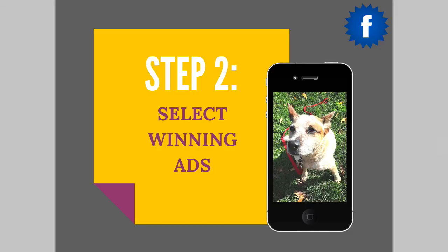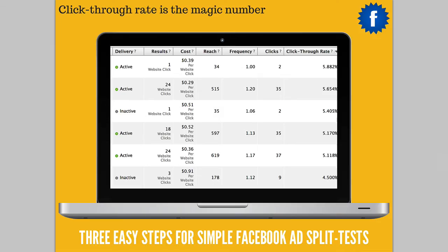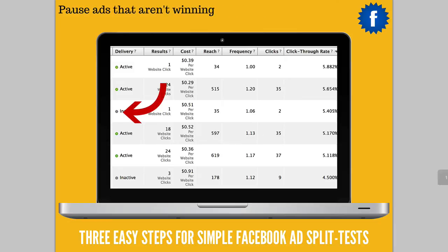The next step in the process is to simply select the winning ads. Rank by click-through rate and select maybe the top three, then pause the ads that aren't winning. Once you select what you want to go forward with, you simply pause what's not winning, because you don't want to spend that money anymore. Those ads are done — we've tested out those images. We want to focus our money on the images that people are initially responding to.